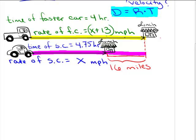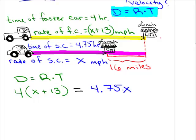I've got a rate, I have a time, I can now set each one up as a distance. So the distance that the faster car traveled, we have to use our distance formula. So the distance is equal to rate times time, would have to be the time, which is 4 hours, times the rate, which is X plus 13. We can now set that equal to the distance of the slower car, which is 4.75X plus the additional 16 miles, which is the difference between those two distances.